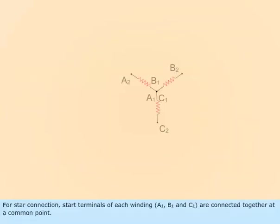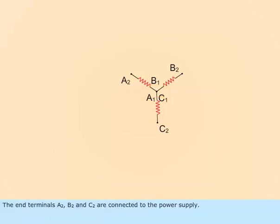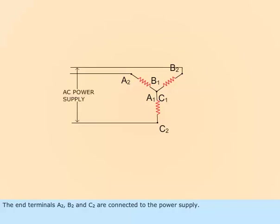For star connection, the start terminals of each winding — A1, B1, and C1 — are connected together at a common point. The end terminals A2, B2, and C2 are connected to the power supply.